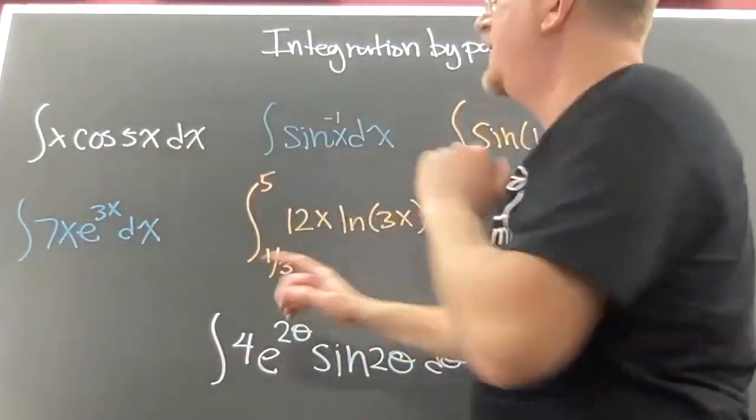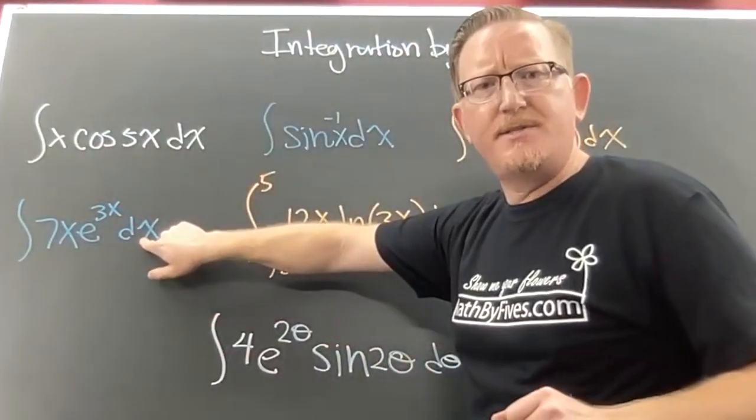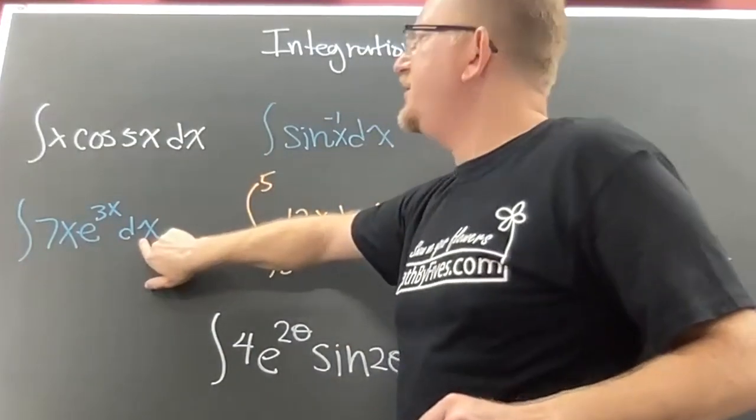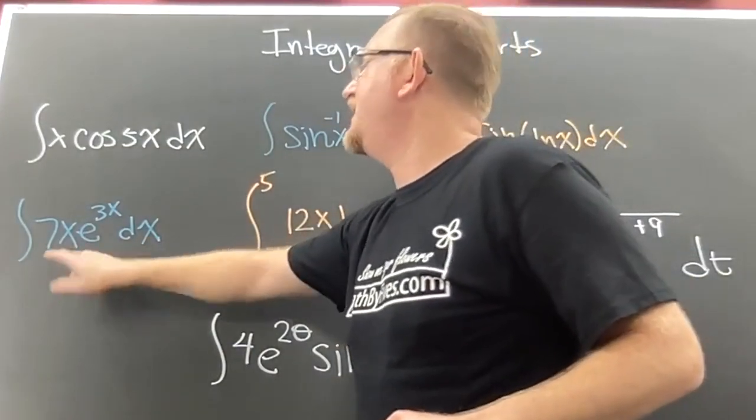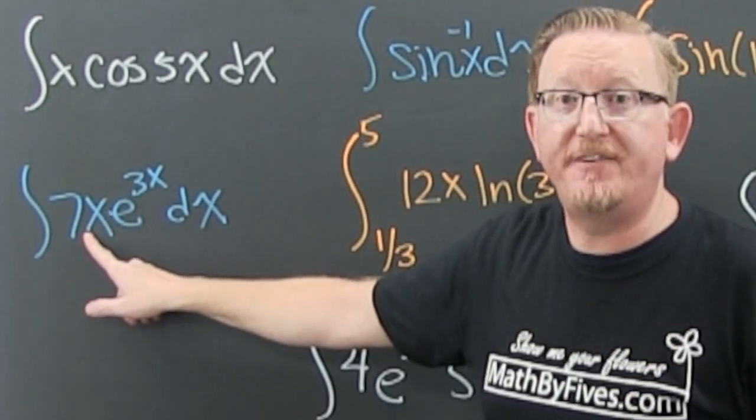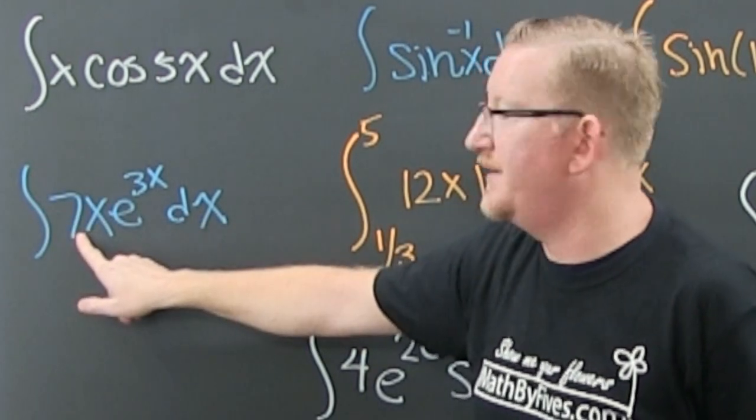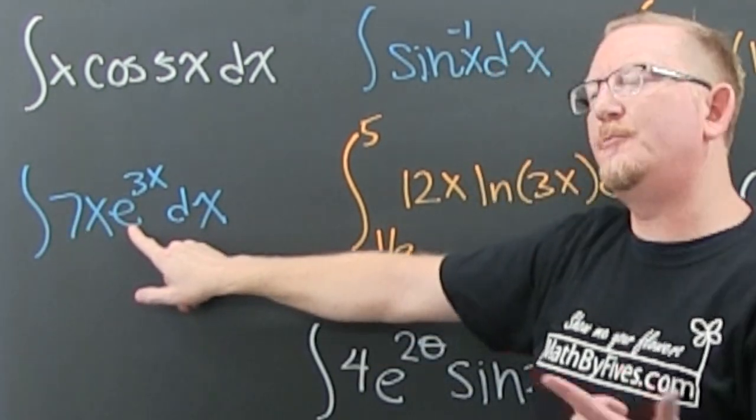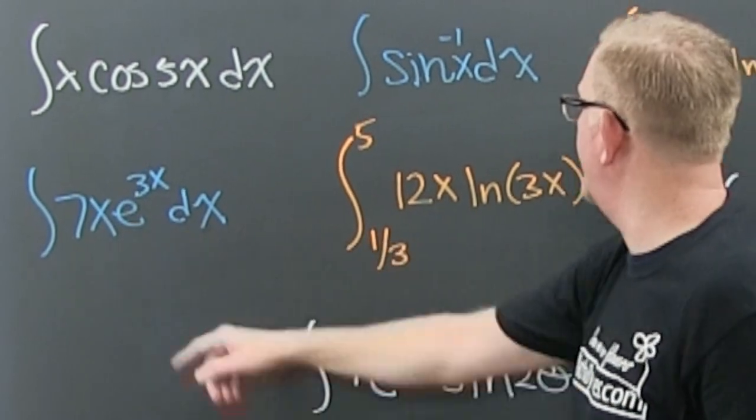Where's this playlist start? Right over here. This one is garden variety. Where you let your u be, let's make our u be this. Why? Because when we take the derivative of this, it gets nicer. That goes away. It becomes a constant. And that makes our dv that. If you want to see that, it'll be the first one in the playlist.